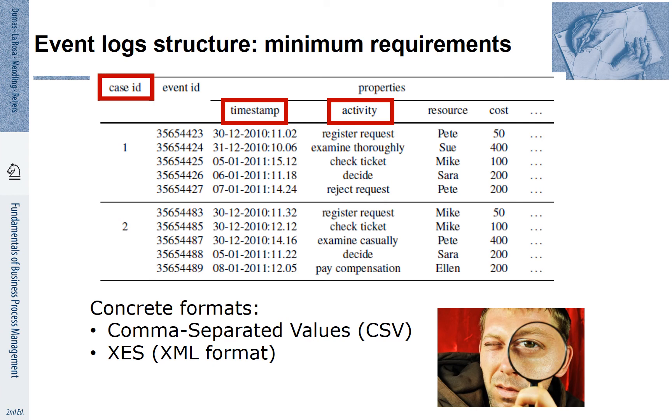Each of these events has happened at a certain point in time. Therefore, we need a column to record the timestamps of these activities. We see here in this case that the timestamps range over a period of time from the end of December 2010 until the second week of January 2011.